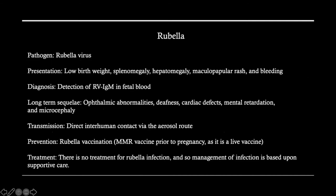The R of TORCH stands for rubella. With this, we see a presentation of low birth weight, splenomegaly, hepatomegaly, and a maculopapular rash that may be slightly more distinct. We would detect it by looking at rubella virus IgM in fetal blood. Long-term sequelae include visual impairment, deafness, cardiac defects, and neurodevelopmental disorders. This is transmitted via aerosol route, so it's important that everyone receive an MMR vaccination prior to pregnancy. There is no treatment, and management is based upon supportive care.